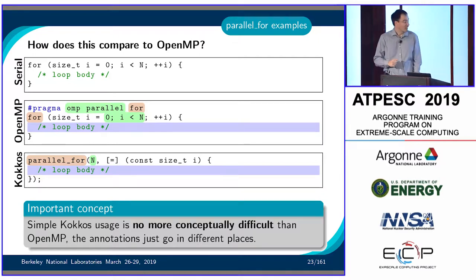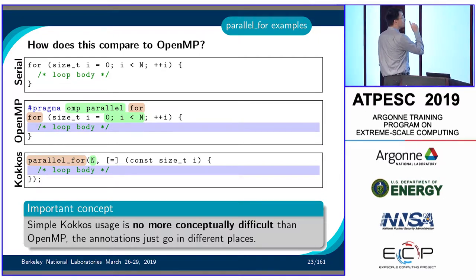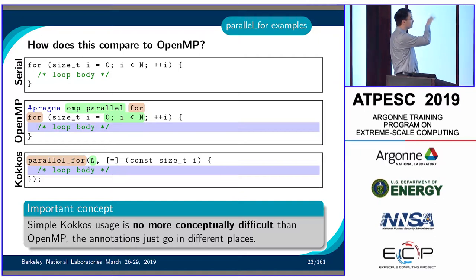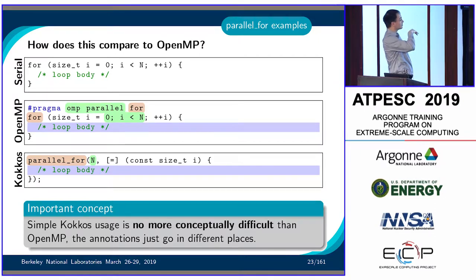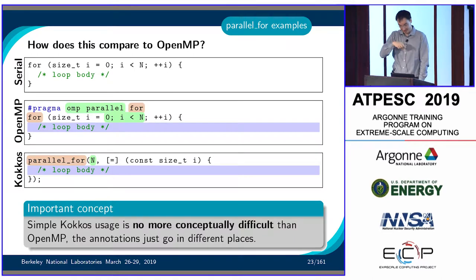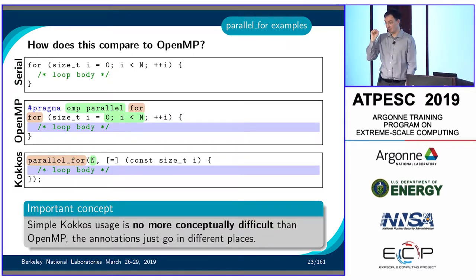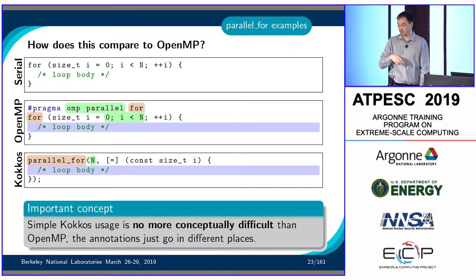Comparing the approaches: in serial you write a for loop with a loop body. In OpenMP you stick a '#pragma omp parallel for' on top. In Kokkos you replace the for with parallel_for, give the count, and use a lambda with the small capture syntax.